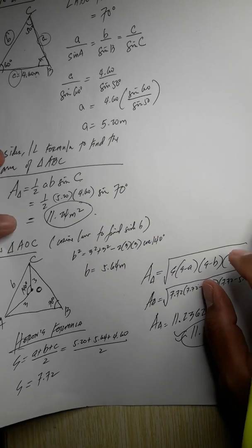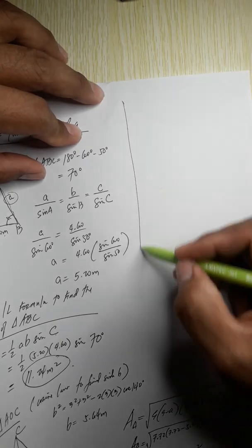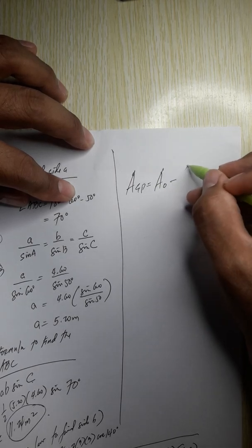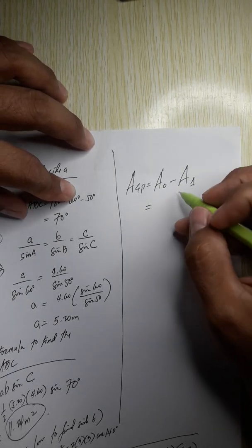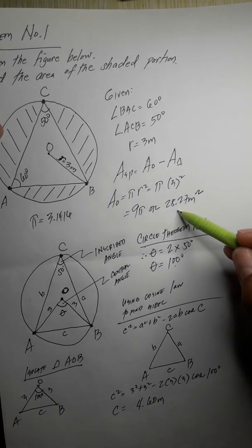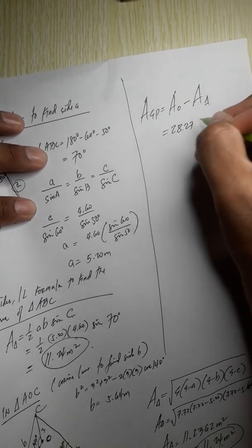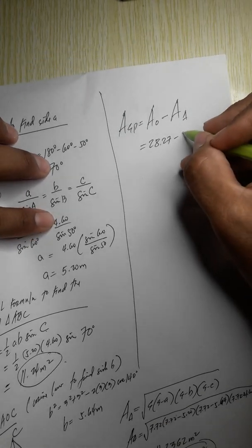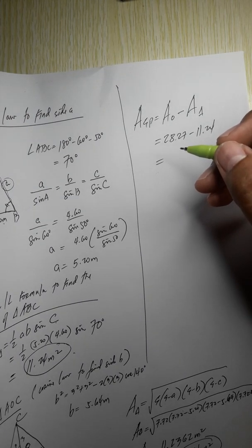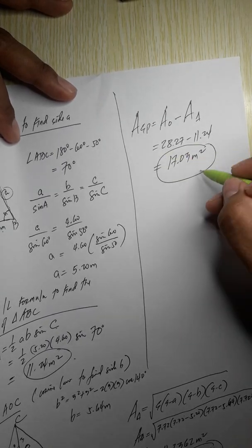The two area values are equal, confirming our answer. The area of the shaded portion equals the area of the circle minus the area of the triangle: 28.27 − 11.24 = 17.03 square meters. This is our final answer.